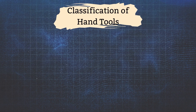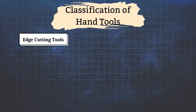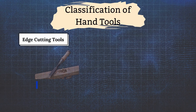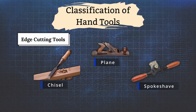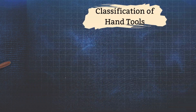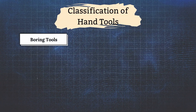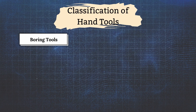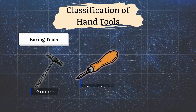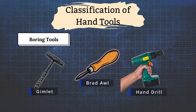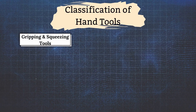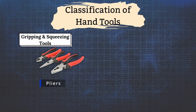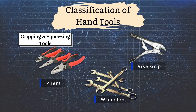Number seven, edge cutting tools — examples are chisel, plane, and spokeshave. Number eight, boring tools — examples are gimlet, brad awl, and hand drill. Number nine, gripping and squeezing tools — examples are pliers, vice grip, and wrenches.